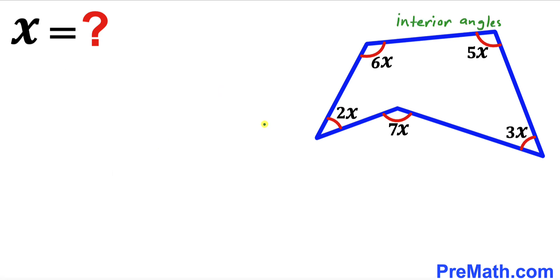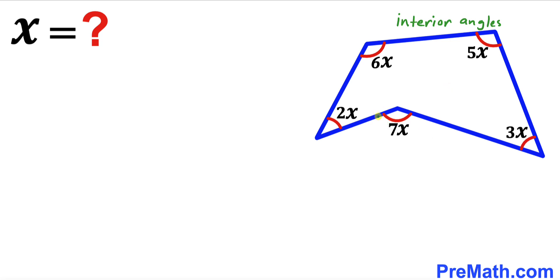Let's get started. Looking at angles 2x, 3x, 5x, and 6x — these are our interior angles for this polygon. For the remaining angle, the inside angle is going to be our interior angle. We know that this whole angle is 360 degrees and this outside angle is 7x, so therefore this interior angle is going to be 360 degrees minus 7x.